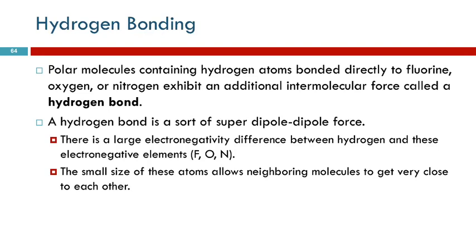The third type of intermolecular force is hydrogen bonding. Hydrogen bonding happens in polar molecules, but only some of them — those where hydrogen atoms are bonded directly to fluorine, oxygen, or nitrogen. These molecules have an additional intermolecular force called a hydrogen bond. You can think of a hydrogen bond as a super dipole-dipole force: it's the same type of force, just a lot stronger.